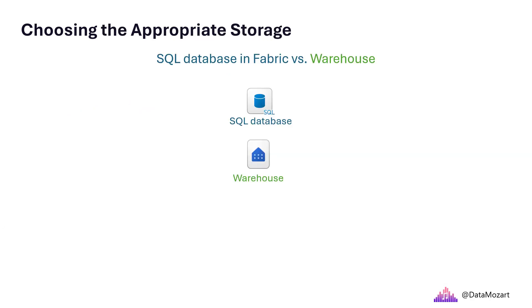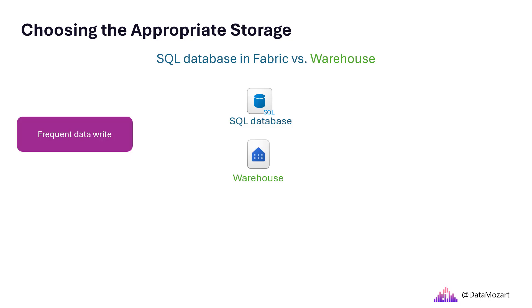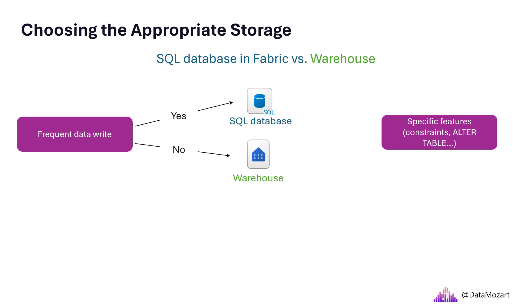Another common question about storing options in Fabric comes from people proficient in using T-SQL. There are two Fabric items that support the so-called CRUD operations — create, read, update, and delete — using T-SQL: Fabric warehouse and SQL database in Fabric. Therefore, the fair question would be when and why to choose one over the other. I've prepared another high-level decision tree to help you pick the right tool for the job. If we talk about frequent data write requirements, SQL database should be your default choice. If you need specific features like constraints or the ALTER TABLE statement, then again go with SQL database.